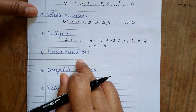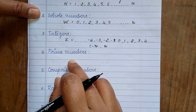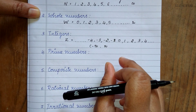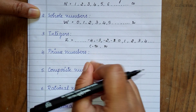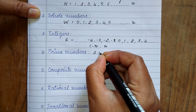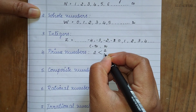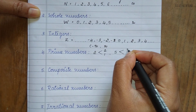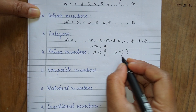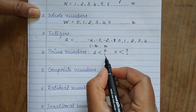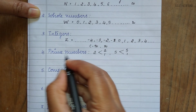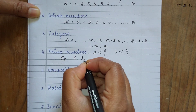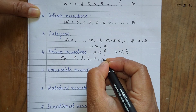Prime numbers are numbers divisible only by 1 and themselves. For example: 2, 5, 7, 13, and so on.